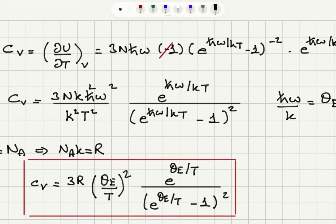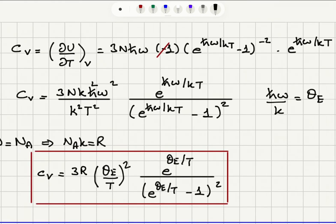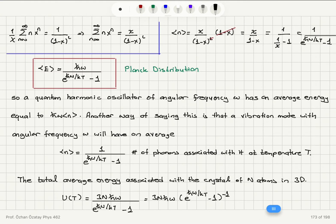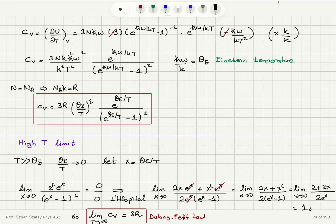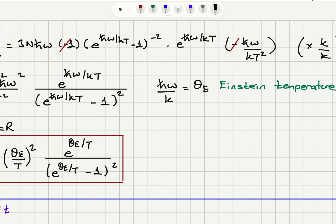To find the heat capacity, I take the derivative of the energy with respect to temperature at constant volume. The factor 3Nℏω is unaffected. The derivative of (e^(ℏω/kT) − 1)⁻¹ gives a factor of −1·(e^(ℏω/kT) − 1)⁻² times the derivative of the exponent, e^(ℏω/kT), times (−ℏω/kT²). The minus signs cancel.